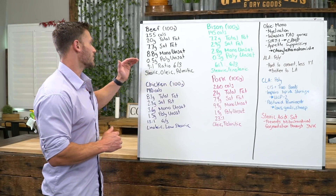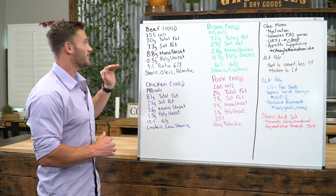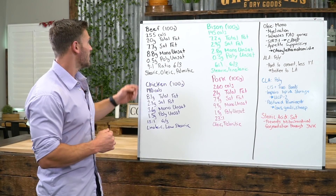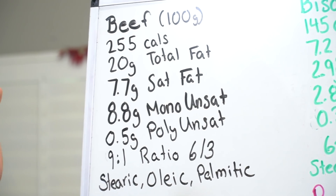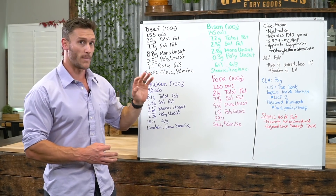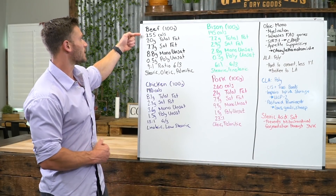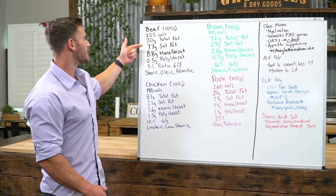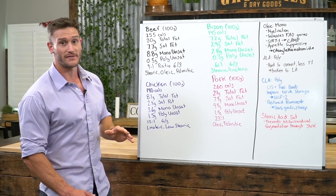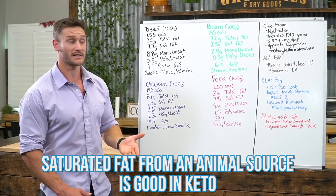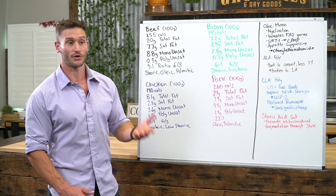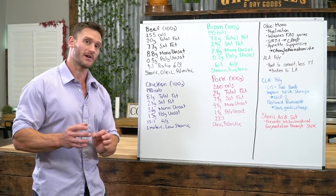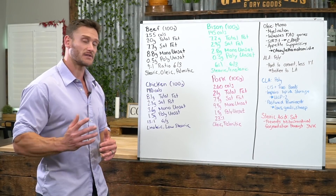So first off, we've got beef. This is taking traditional grain-fed beef — grass-fed beef is going to be markedly better. A 100-gram serving of beef has 255 calories and about 20 grams of total fat, 7.7 grams of which is saturated fat. We want saturated fat — saturated fat from an animal source is good for us, especially in keto, for myelination, nerve health, brain health, and actually preventing atherosclerosis, because it creates specific compounds in the blood that stave off inflammation.